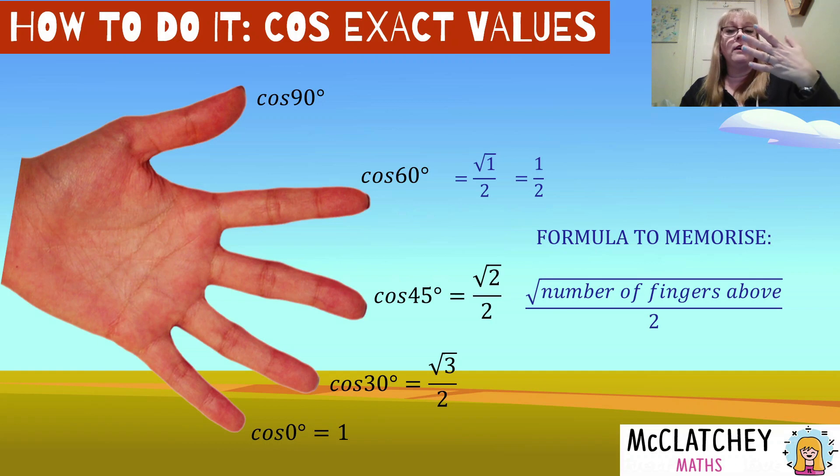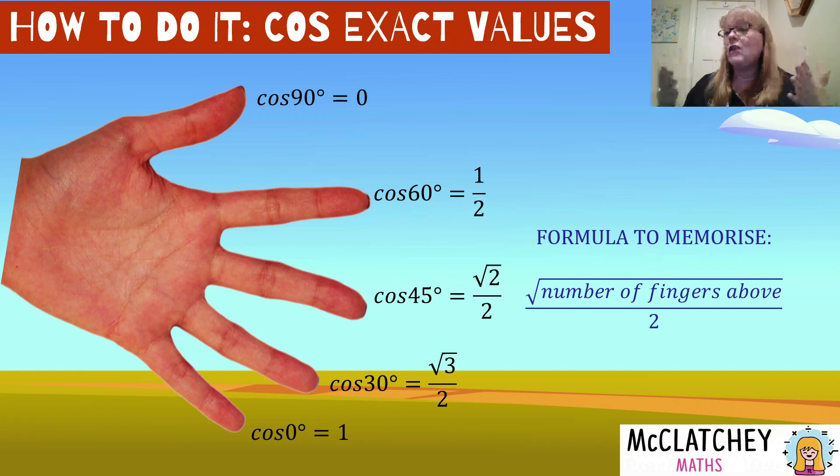And then we get to cosine of 90. If I hold my thumb in, I've got no fingers above, zero over two just gives me zero. So that's our cosine exact value. You can see this quick little trick, I've taught it to students, they actually seem to remember this one pretty well. Often see them sitting in the exam doing things like this, working it out for themselves. So all you need to do is memorize the two formulas and you can find sine and cosine of all those key important angles.